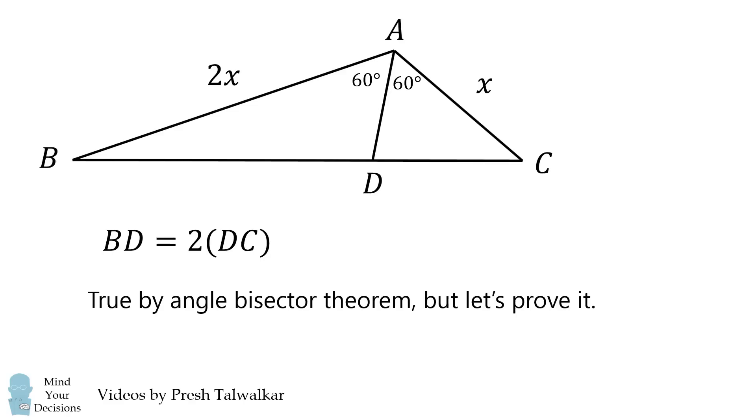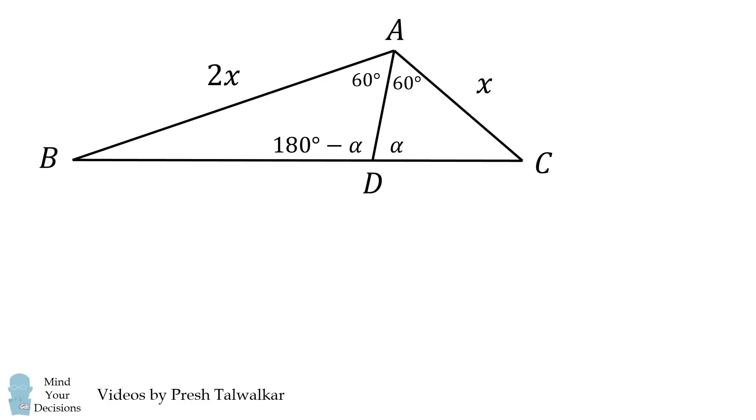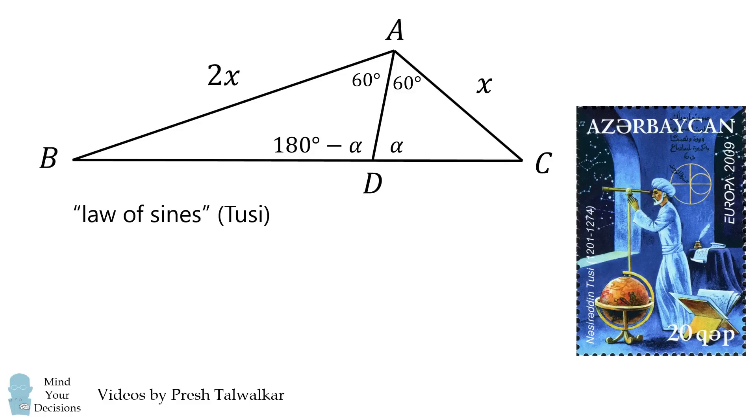This follows immediately by the angle bisector theorem, but if you didn't remember the angle bisector theorem, let's prove it. So let's get started by labeling angle ADC as alpha. Then angle ADB will be supplementary, so it will be 180 degrees minus alpha. Next, we'll use the law of sines, which I read was first described by the Persian mathematician Tusi.